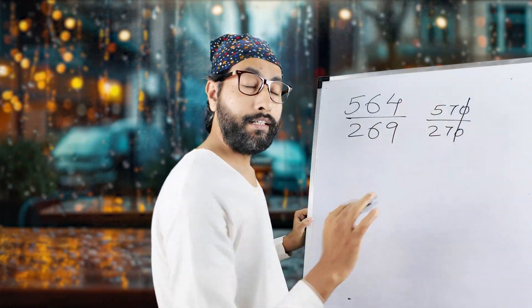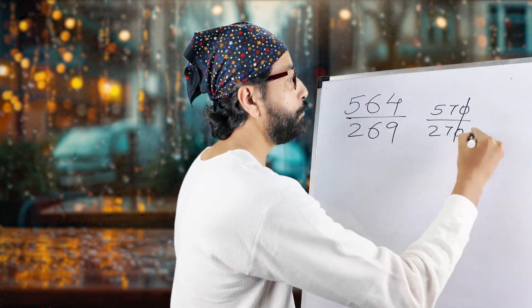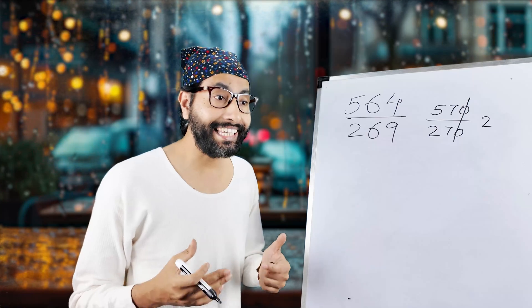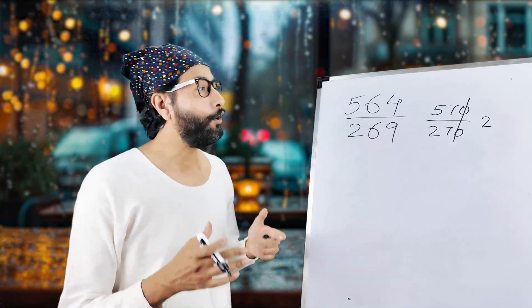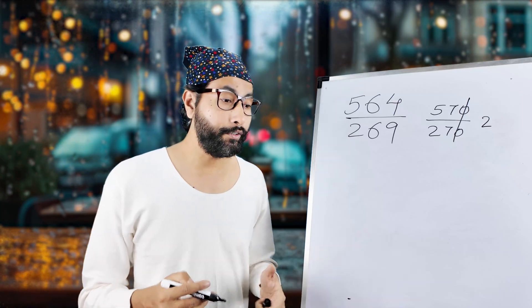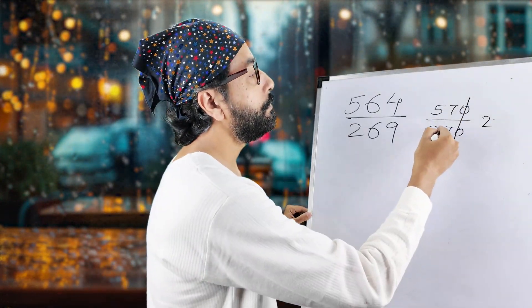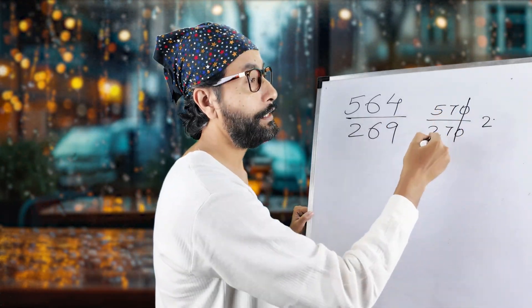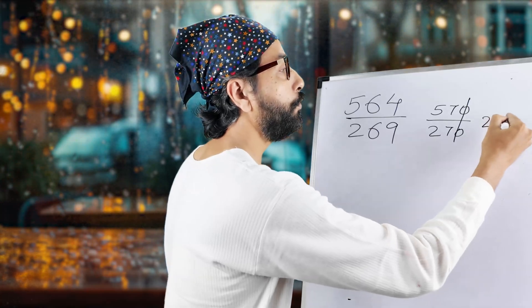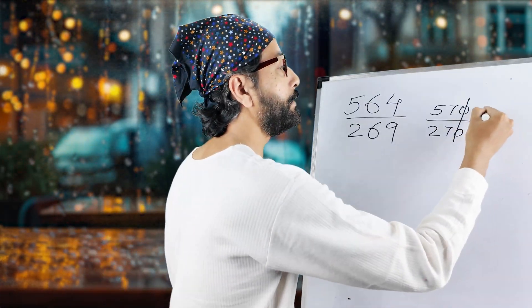27 twos are 54, right. So we have 57 over 27. We can work with this, but let's go a little further to get a more accurate value. Whatever we do in this video, we're going to get an approximated value. So 27 goes into 57 twice, and then working further we get 2.1. So 2.1 is your ratio.